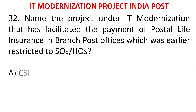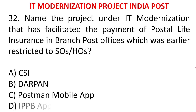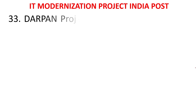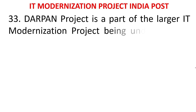MCQ 30: Name the project under IT modernization that facilitated the payment of postal life insurance in branch offices, which was earlier restricted to sub-offices and HOs. Options: CSI, DARPAN, Postman Mobile App, or IPPB App. The answer is DARPAN. Earlier BOs were not allowed to take PLI premiums from customers; now it is allowed based on the DARPAN device.